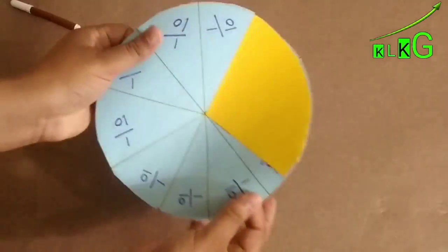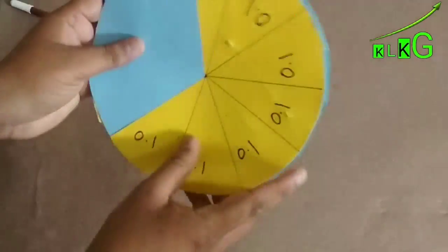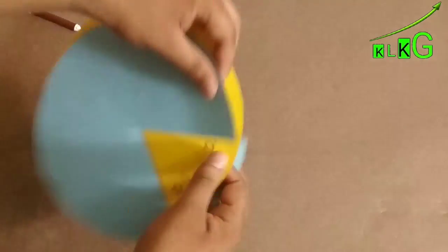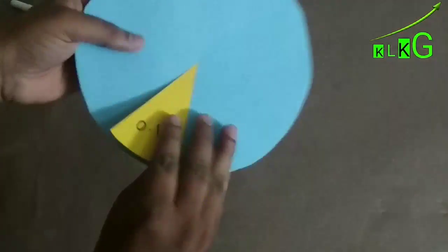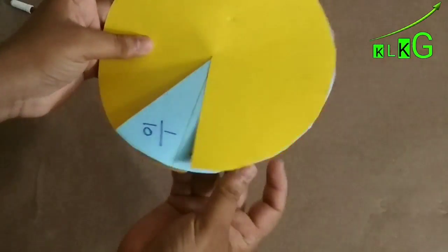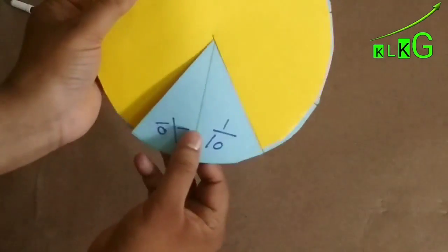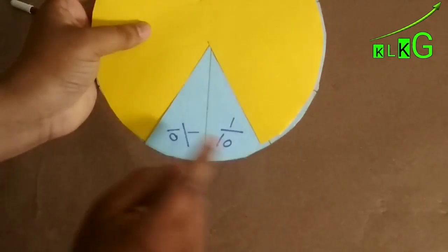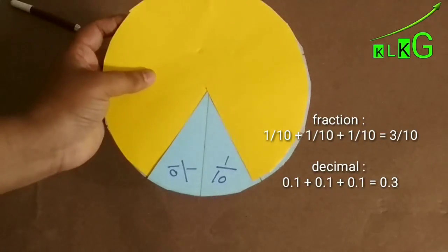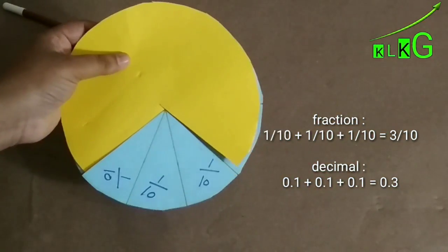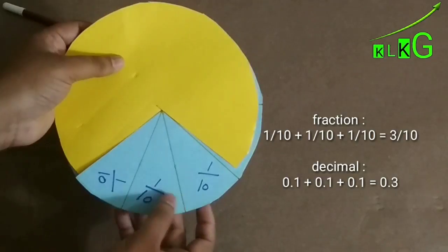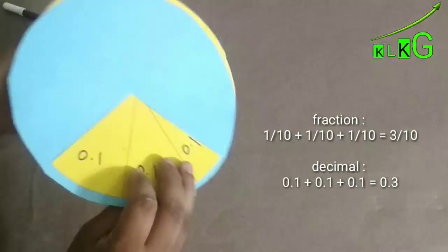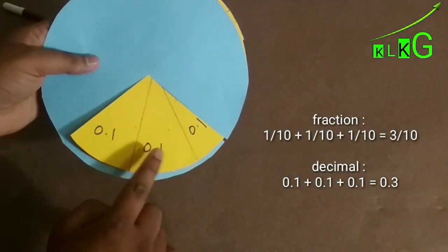Now set both the circles together and see how this works. If we convert 0.1 into a fraction we get 1 by 10, and if we convert 1 by 10 into a decimal we get 0.1. Now, 1 by 10 plus 1 by 10 plus 1 by 10 is equal to 3 by 10, and in decimal we say 0.3.